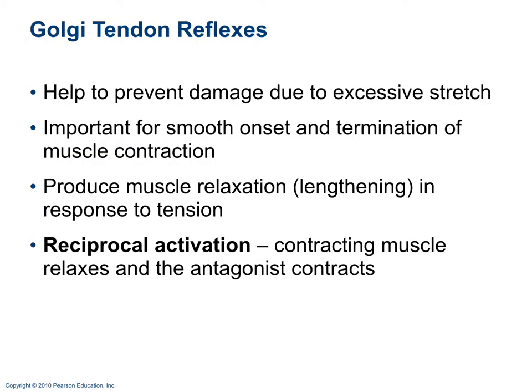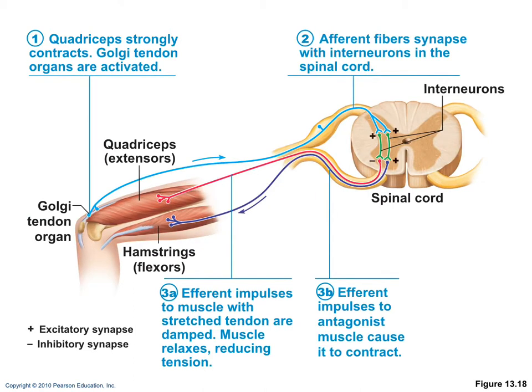Golgi tendon reflexes are designed to prevent damage from excessive stretch. When a muscle strongly contracts, it stretches the tendon, activating the Golgi tendon organ. The response is inhibition of that muscle (e.g., the quadriceps) and activation of the antagonist (e.g., the hamstrings) — this is called reciprocal activation, the opposite of reciprocal inhibition.